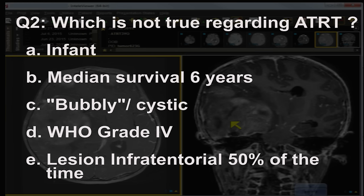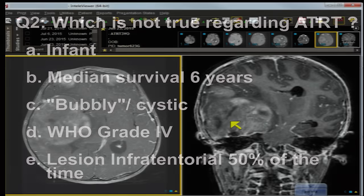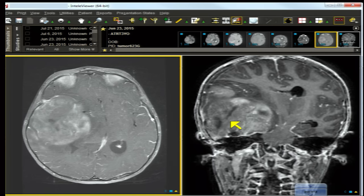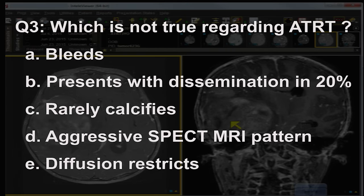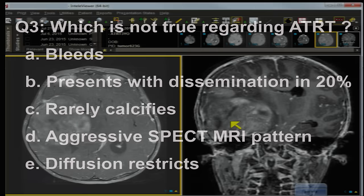The lesion is infratentorial 50% of the time, though this case is supratentorial, occurring at least 40% of the time. For question three, the answer is 'rarely calcifies' — that is NOT true; ATRT calcifies not uncommonly. The remaining statements are all true: it does bleed, it does disseminate in at least 20% of cases, it has an aggressive spectroscopy pattern, and it diffusion restricts because it is extremely aggressive.